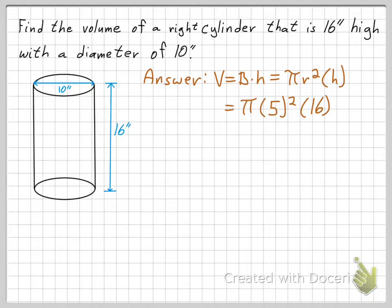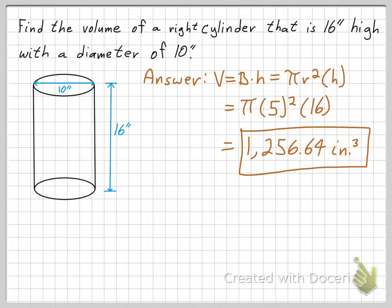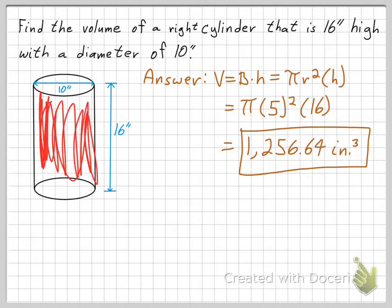So, if you take these numbers and multiply them out, you get 1,256.64 cubic inches. Again, that would be the amount of, say, water that can fill up this drum, this right cylinder.